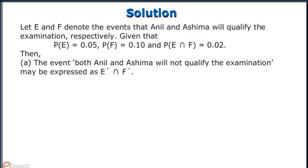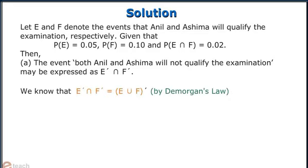Given that probability of E is 0.05, probability of F is 0.10, and probability of E intersection F is 0.02. Then part A: the event 'both Anil and Ashima will not qualify' may be expressed as E' intersection F'. Part B: probability that at least one of them will not qualify is equal to 1 minus the probability that both of them will qualify, which is equal to 1 minus 0.02, that is 0.98.